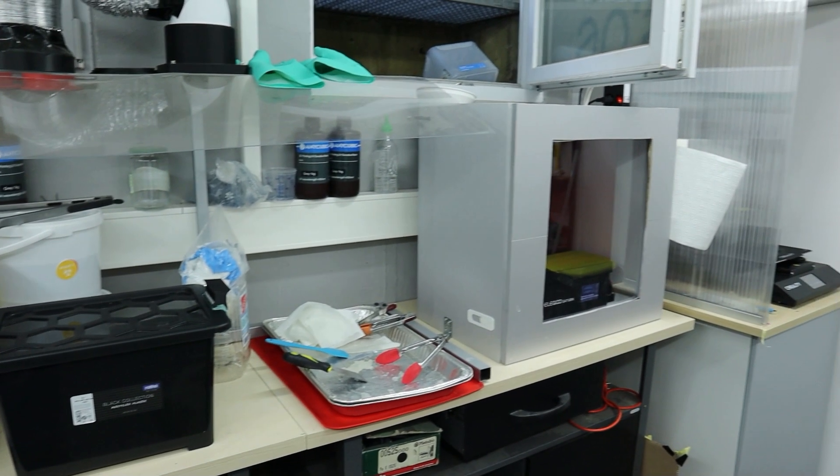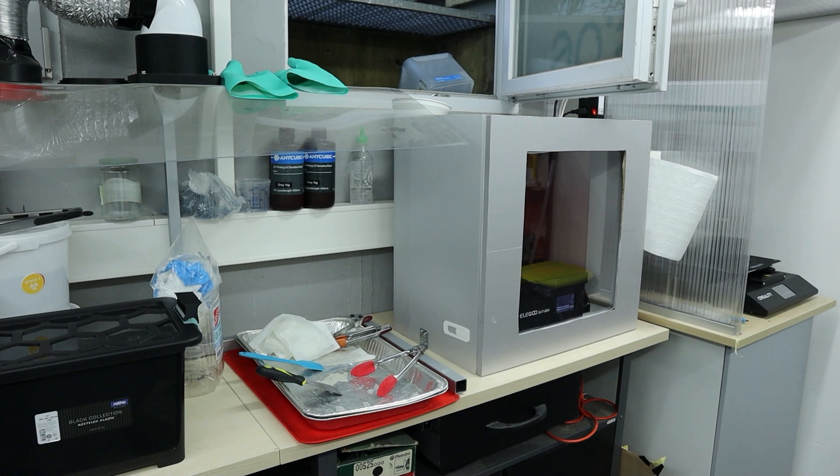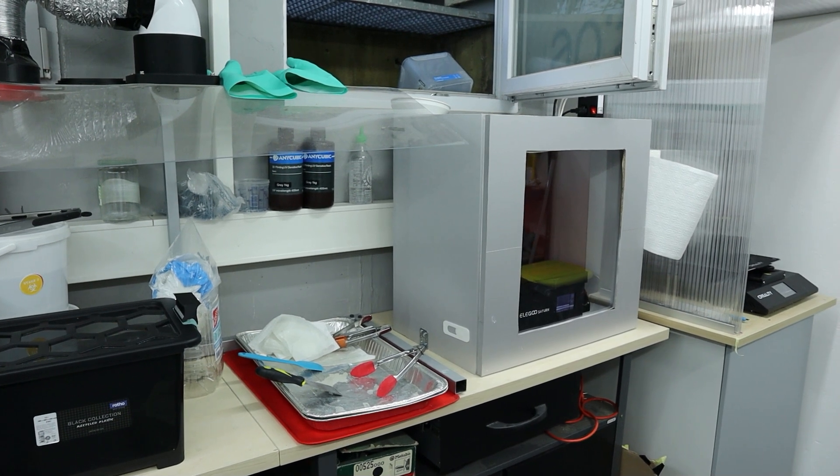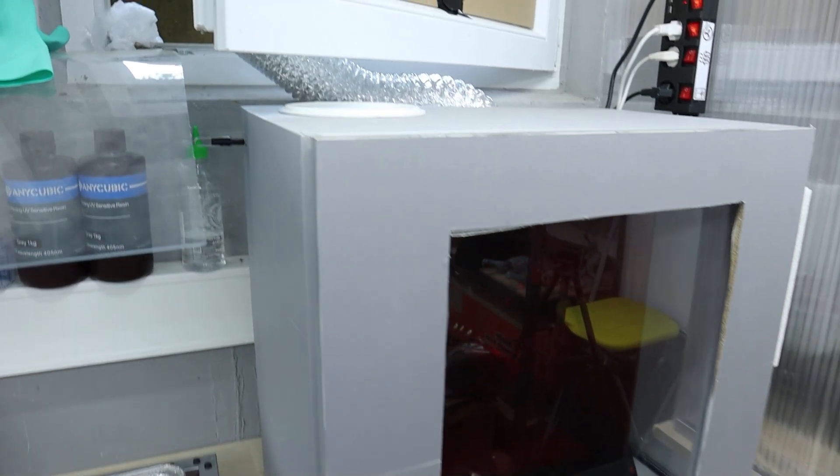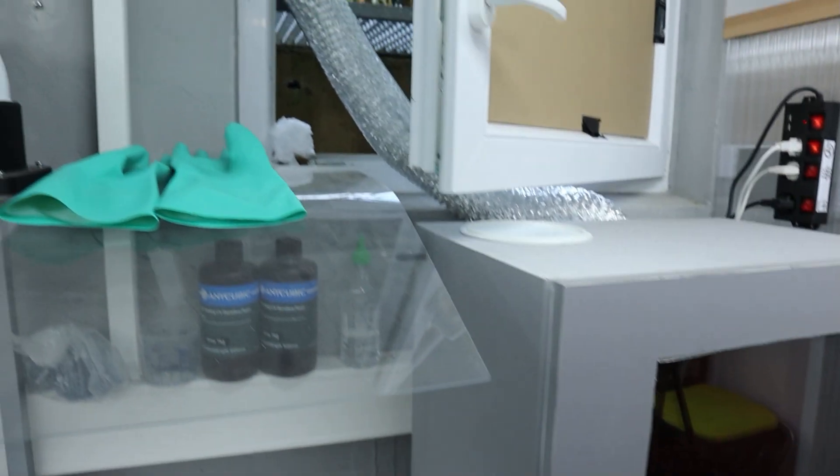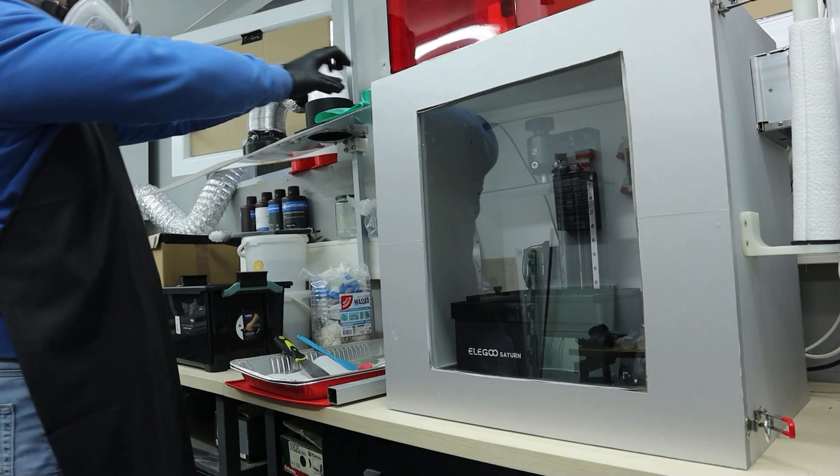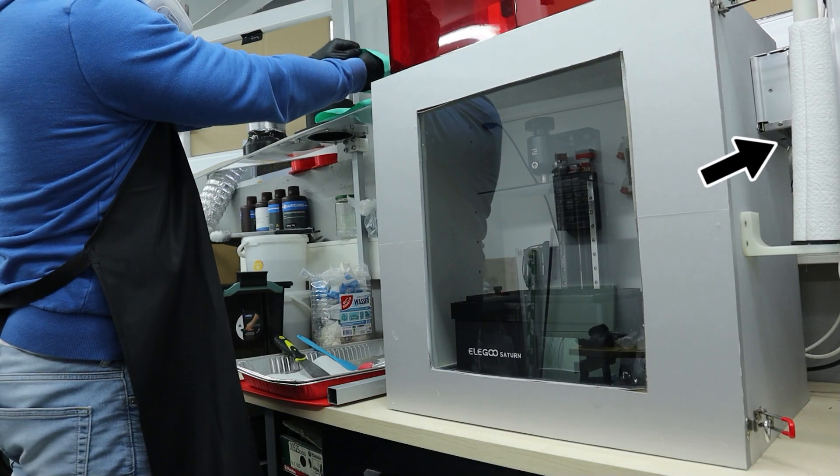Now let me show you my resin printing workbench. It's essential to have a well organized and clean workspace. I have my printer inside an airtight DIY IKEA enclosure with a fan that I use to suck out the air before I open the enclosure after printing. Also right next to my printer I have my paper towel roll since you can never have enough paper towels.